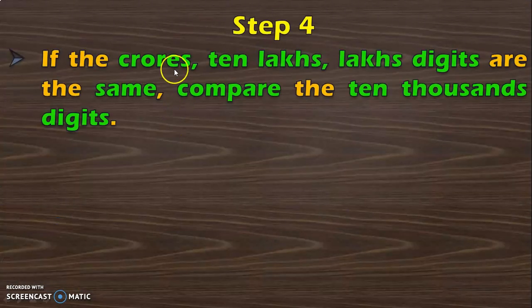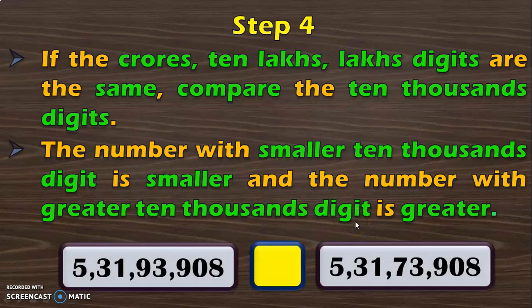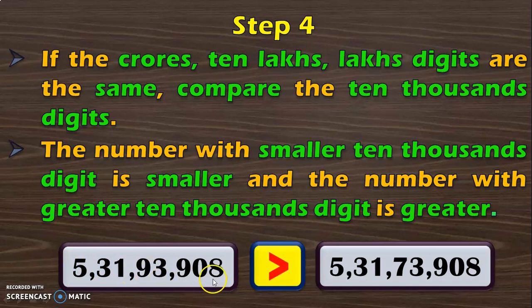Next, if the crore's, 10 lakhs, and lakhs digits are the same, the next lower place value will be the 10,000th digit which you have to compare. The number with smaller 10,000th digit is smaller and the number with greater 10,000th digit is greater. In this example, the crore's place value, 10 lakhs, and lakhs are the same. So the next place value to compare has 9 and 7 in the 10,000th digit. We know that 9 is greater than 7. With that you conclude 5 crore 31,93,908 is greater than 5 crore 31,73,908.